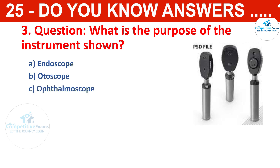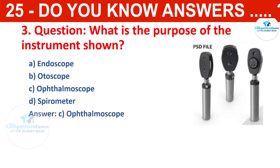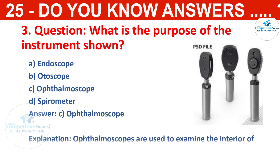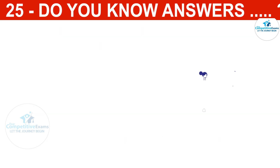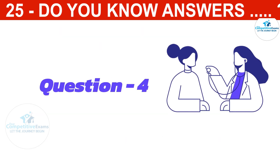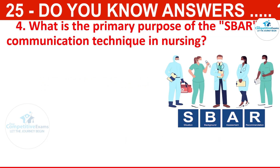What is the purpose of the instrument shown below? The options are endoscope, otoscope, ophthalmoscope, or spirometer. The correct answer is ophthalmoscope. Ophthalmoscopes are used to examine the interior of the eye.